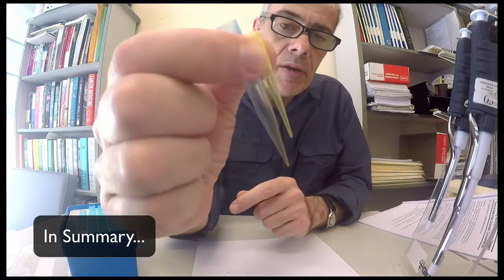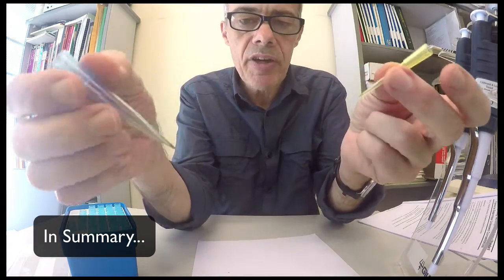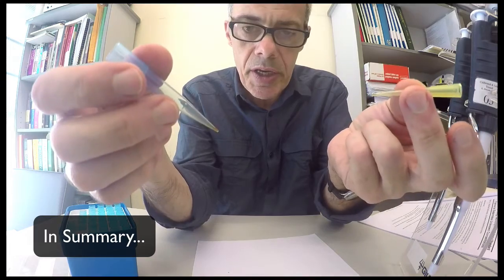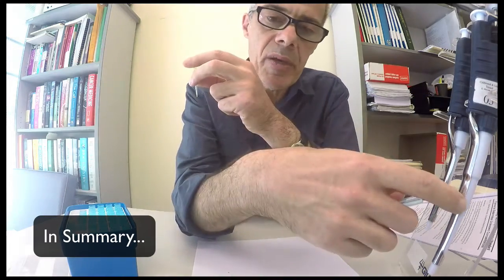Be sure to use the correct tip for the pipette. There are various size tips. I've shown you two here. The blue one is for the P1000, the yellow one is for the P200.